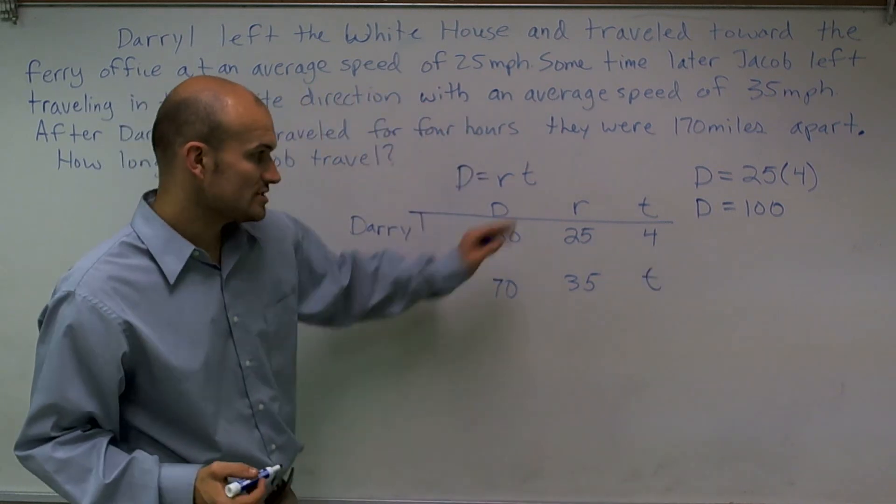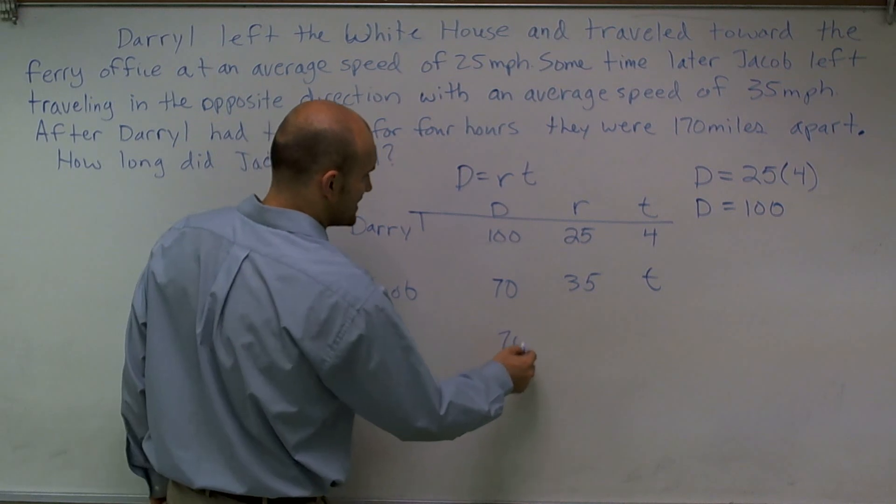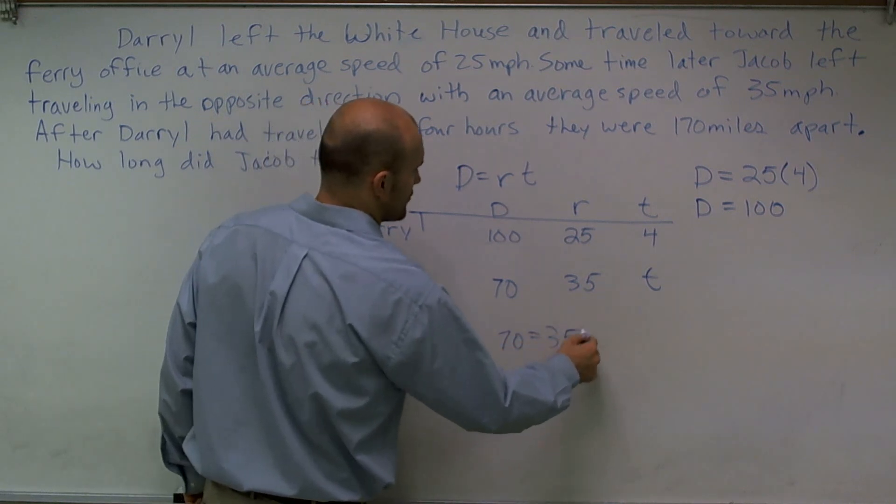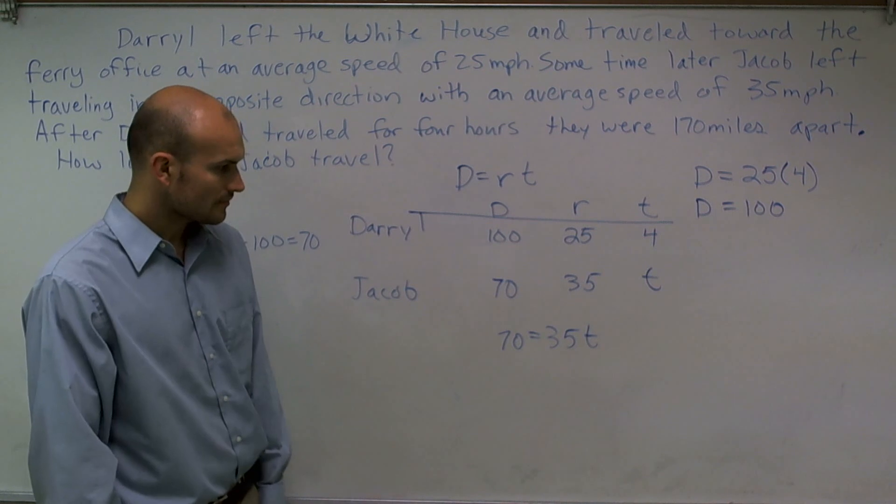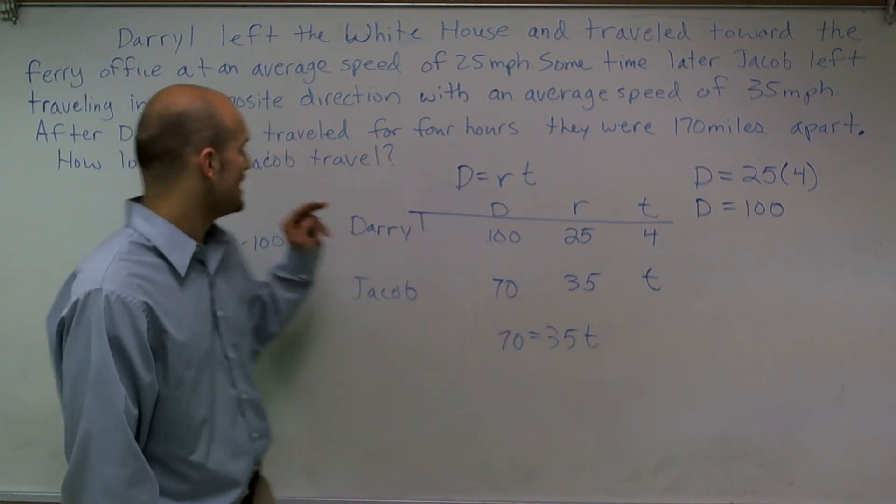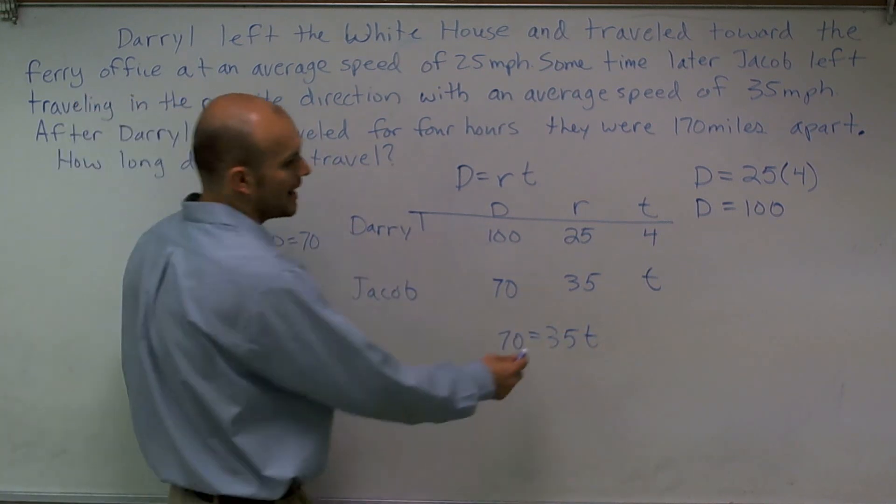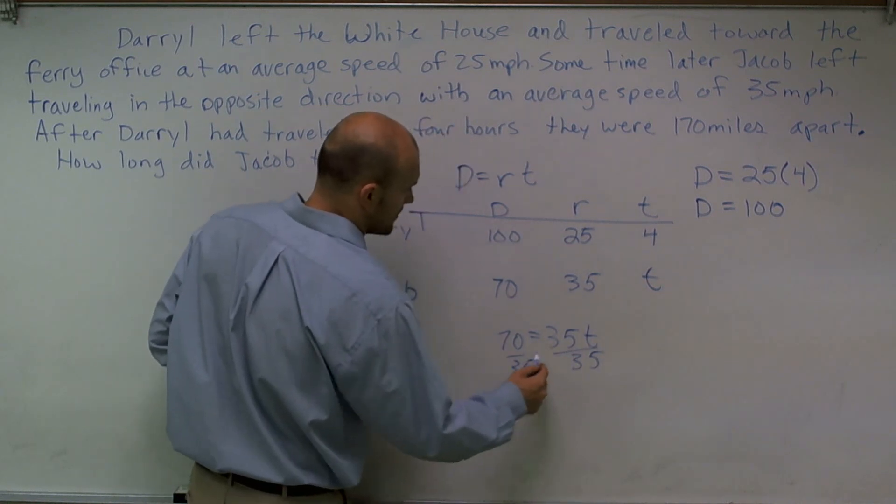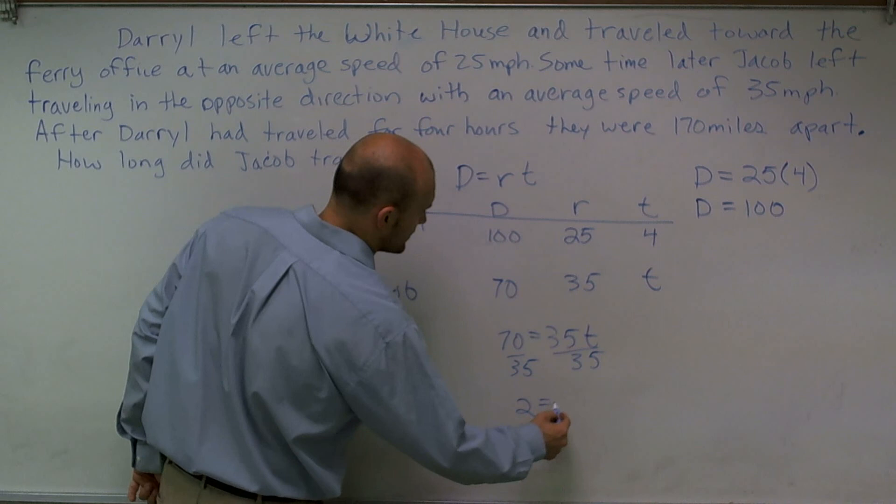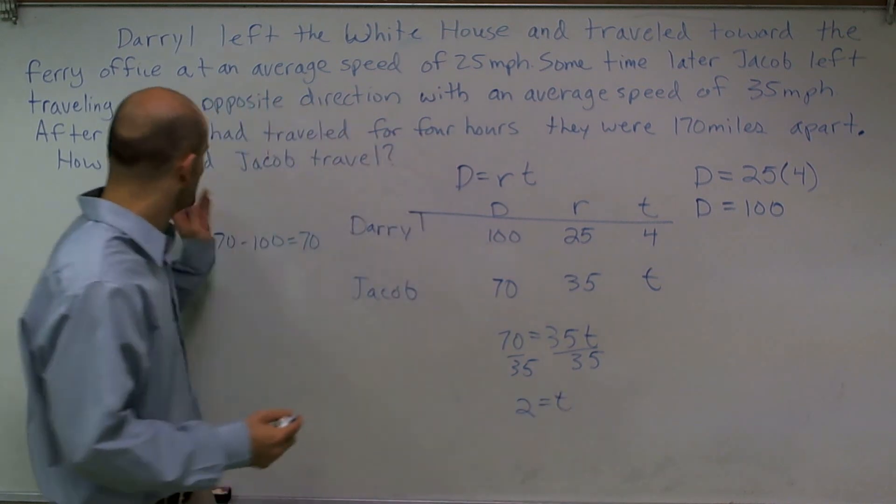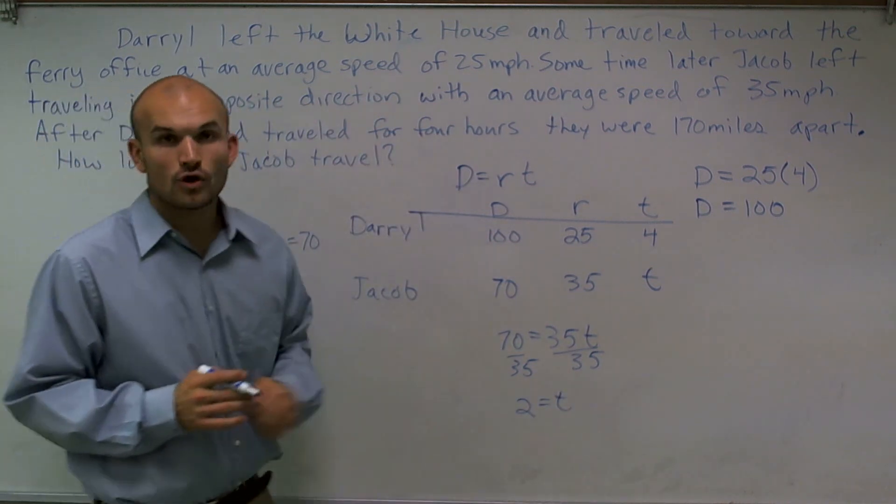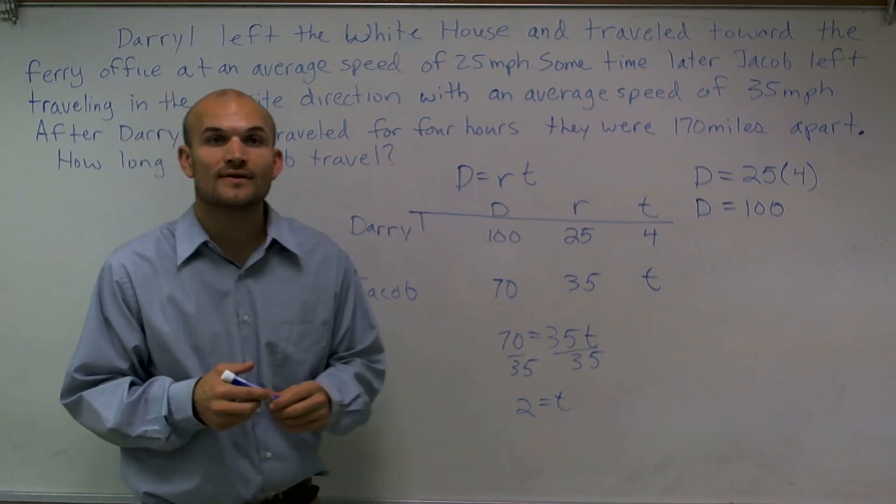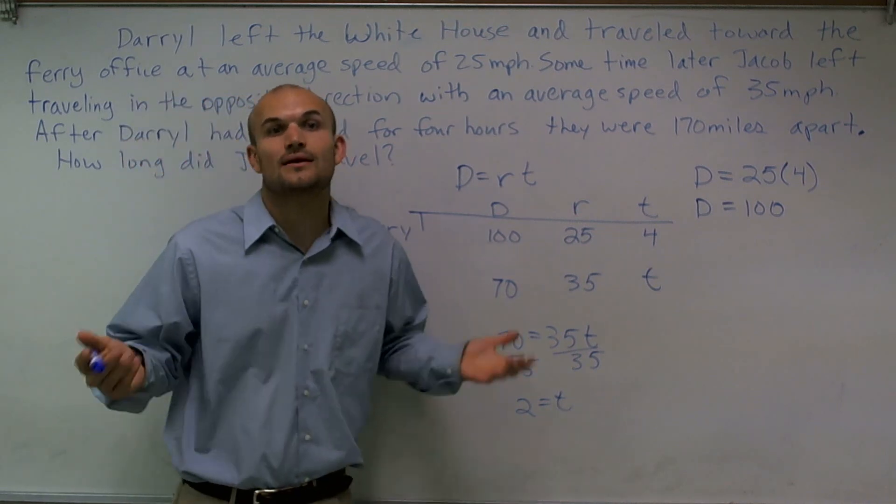Now, again, using my equation, I could say 70 equals 35t. To figure out the time that Jacob traveled, I will divide by 35 on both sides. And when I get 2 equals t, that means Jacob traveled for 2 hours. And that is how you solve a basic distance and rate problem.